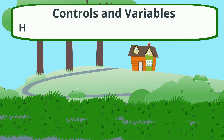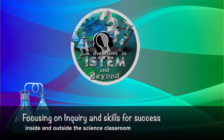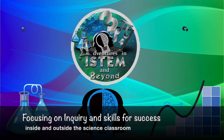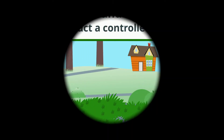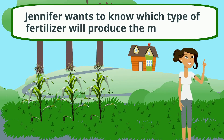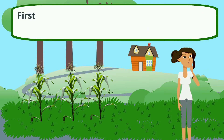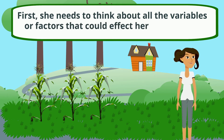Controls and Variables: how to conduct a controlled experiment. Jennifer wants to know which type of fertilizer will produce the most corn. First, she needs to think about all the variables, or factors, that could affect her experiment.